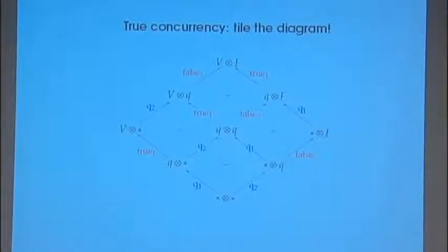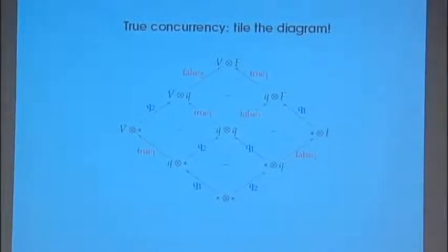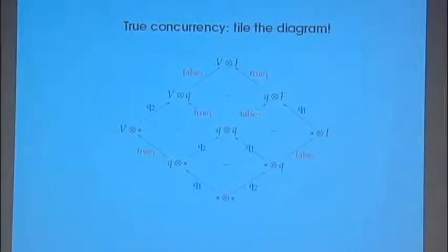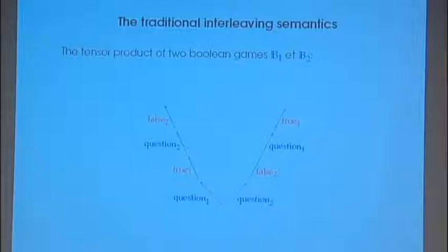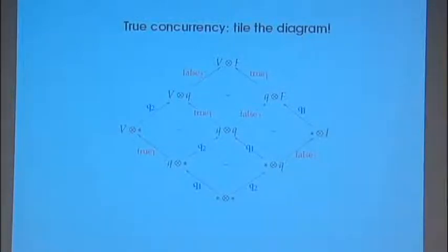Given an event structure, you can immediately construct a graph where you can permute moves or events. A position is defined as a pairwise compatible, downward-closed subset of M. The asynchronous graph associated to the event structure has vertices as finite positions. Going from one position to another: you pick an event M and ask that Y equals X union {M}, where the union is disjoint — the event should not appear in X.